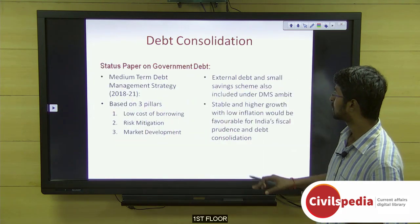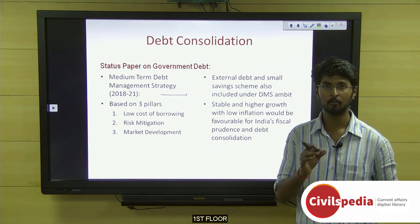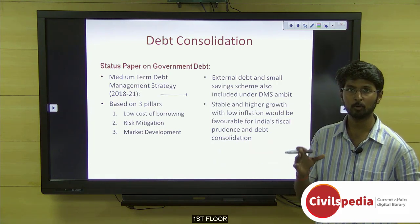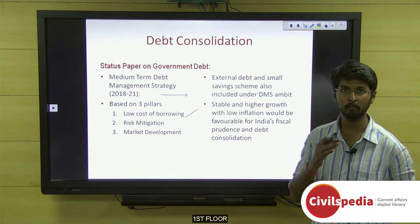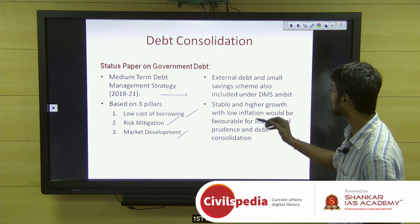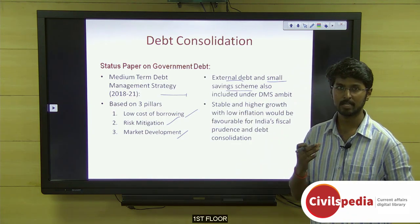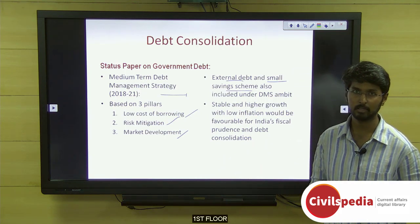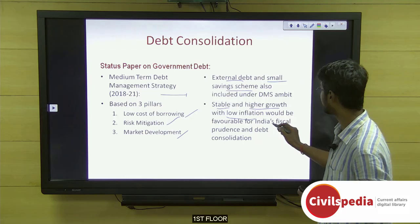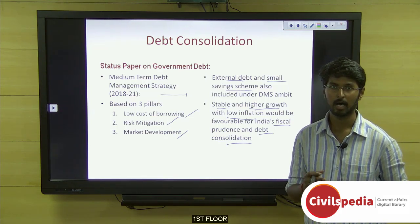This status paper has come up with a medium-term debt management strategy — first introduced in 2015 for three years (2015-18); this is the second strategy document for 2018-21. It is based on three pillars: low cost of borrowing, mitigating risks, and developing securities markets. The IMF's World Economic Outlook states India will have stable and higher growth with low inflation, which would be favorable for India's fiscal prudence and debt consolidation.